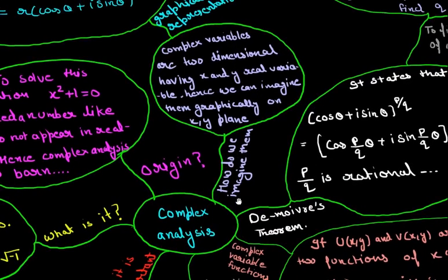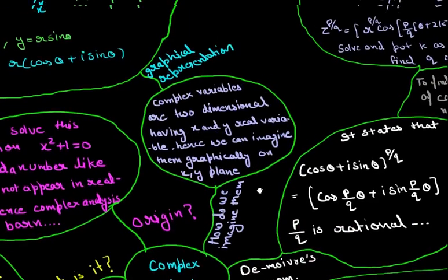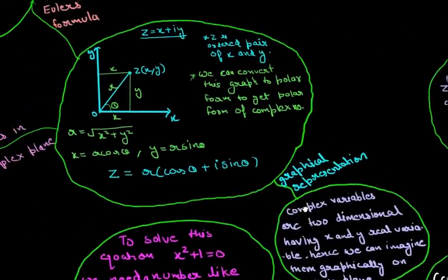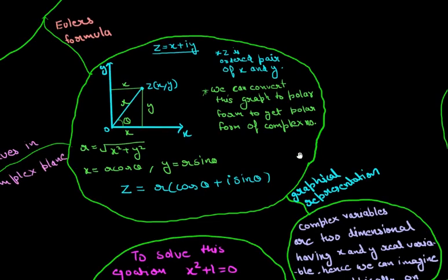Now let's go back and go in here. Complex numbers are also called imaginary numbers. So how do we imagine them? Complex variables are two dimensional having x and y real variables. Hence we can imagine them graphically on the xy plane. This is their graphical representation and this is their polar form.